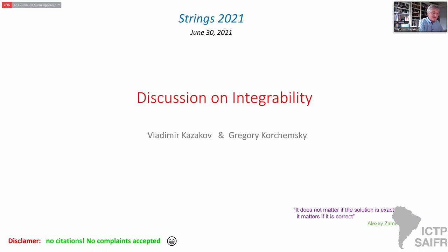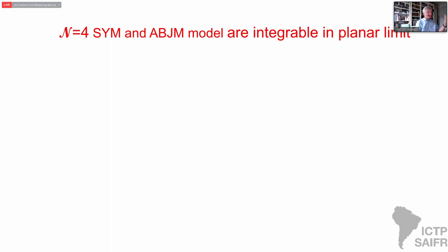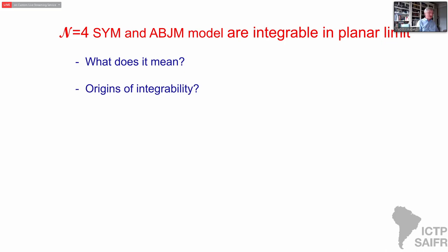Thanks for this opportunity to lead this discussion. I should warn from the very beginning that it will be mostly about integrability in planar N=4 super Yang-Mills. Let me first declare that N=4 super Yang-Mills and the ABJM model are integrable in the planar limit, as we now know. The global questions we want to pose are: what does integrability mean in this case, what are its origins, what is achieved due to integrability, and what else might be achieved?